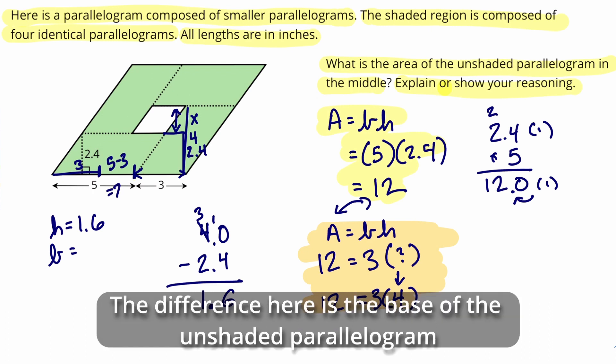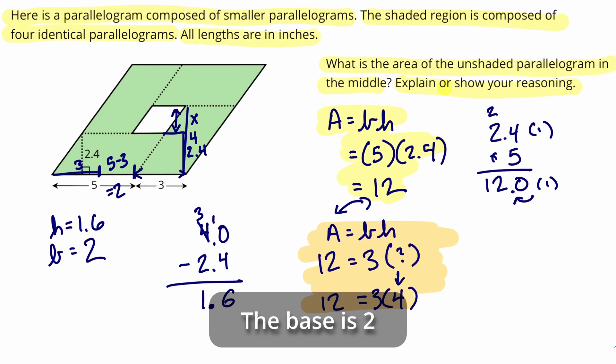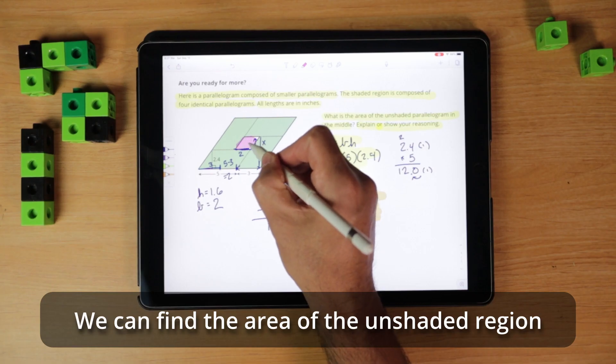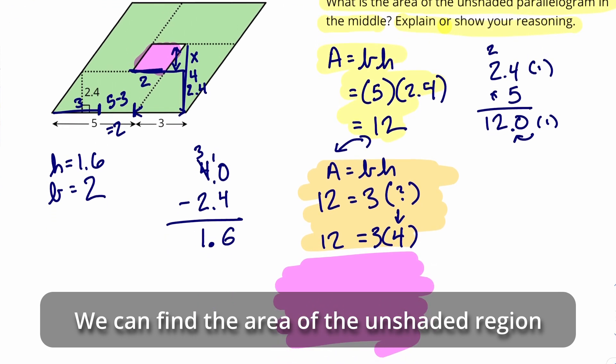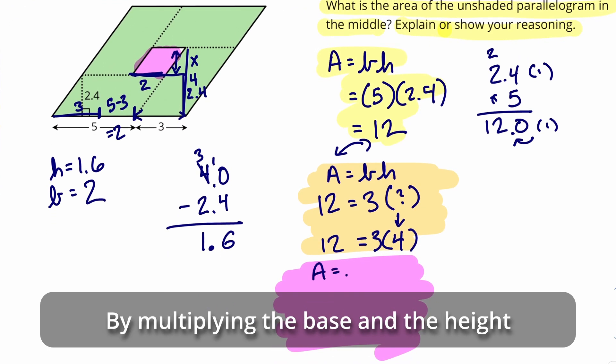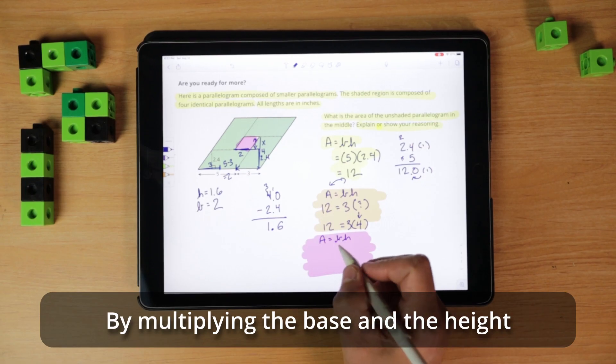This whole distance is 3 all the way down. So if we have 5 in that other parallelogram and subtract 3, we know that space in between is just going to be 2. So we can find the area of that unshaded region by multiplying the base and height.